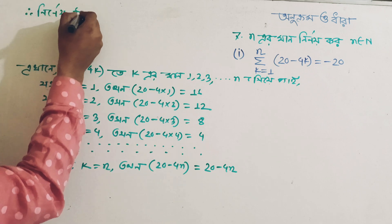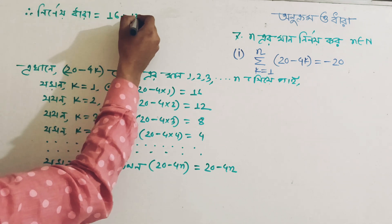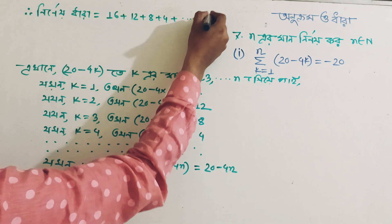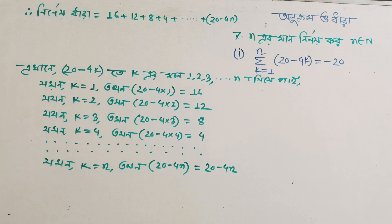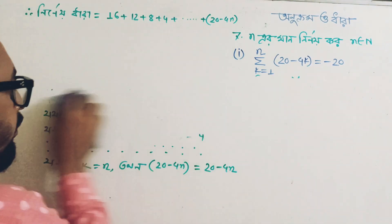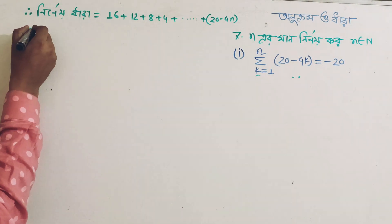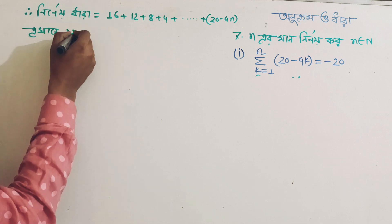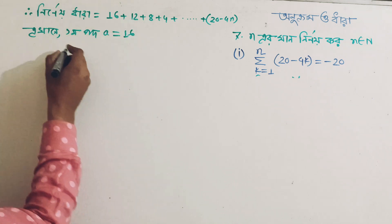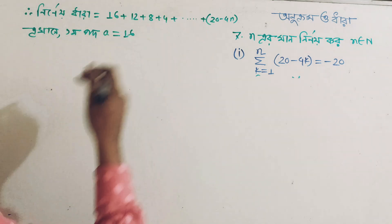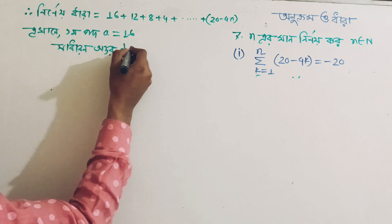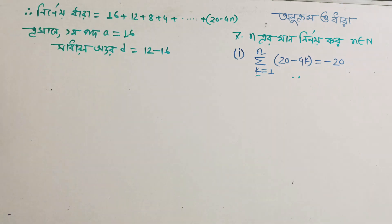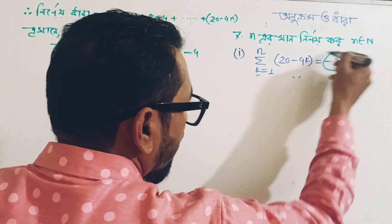So the amount of that sum is equal to 20 minus 4n. The first part: a is equal to 16. The second part is also equal to 16. The last term is equal to minus 20.